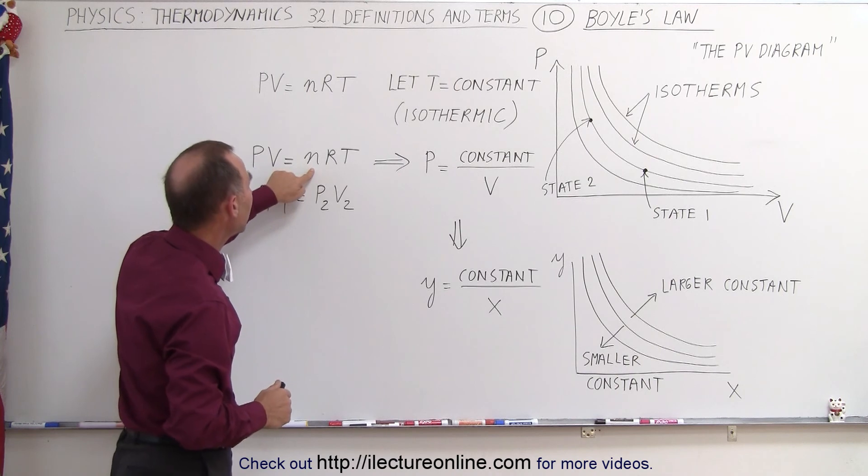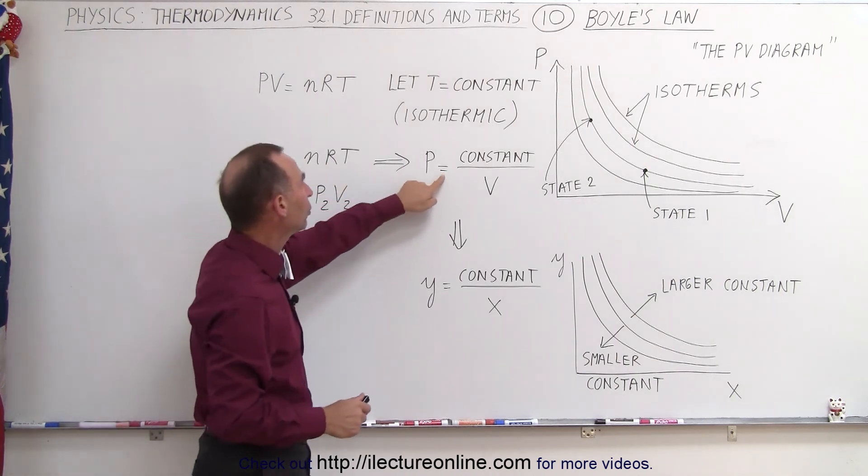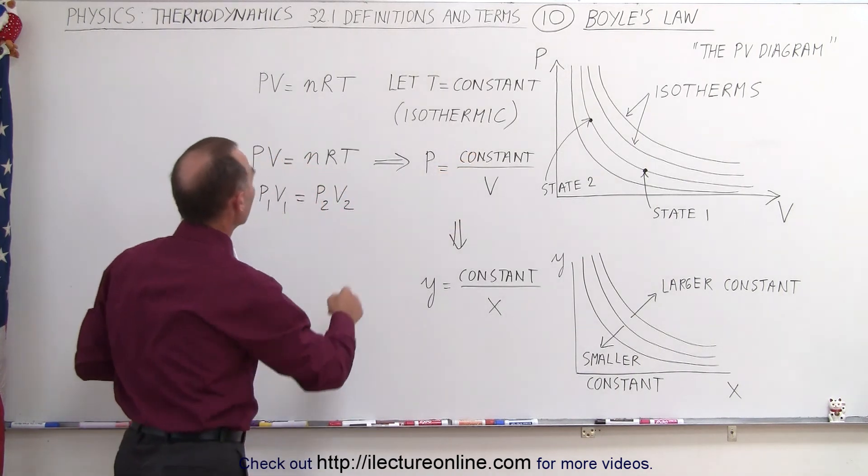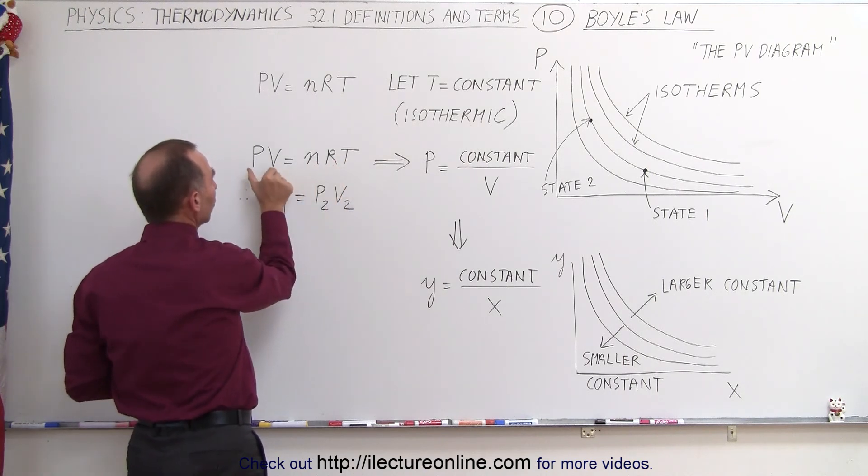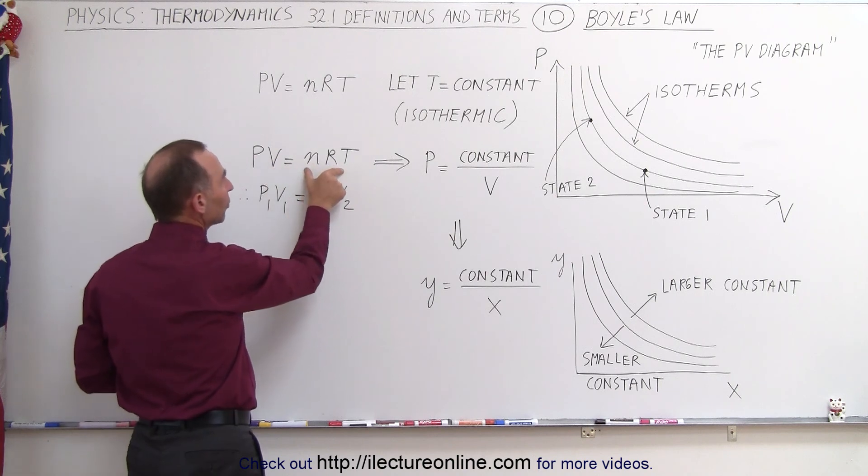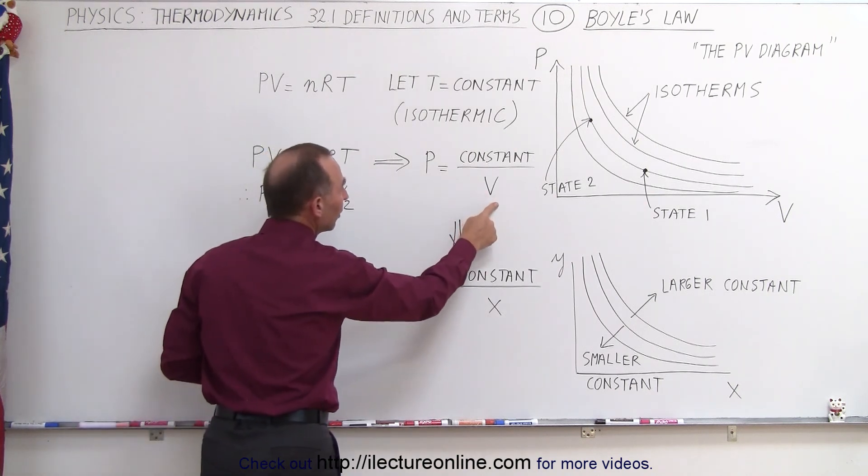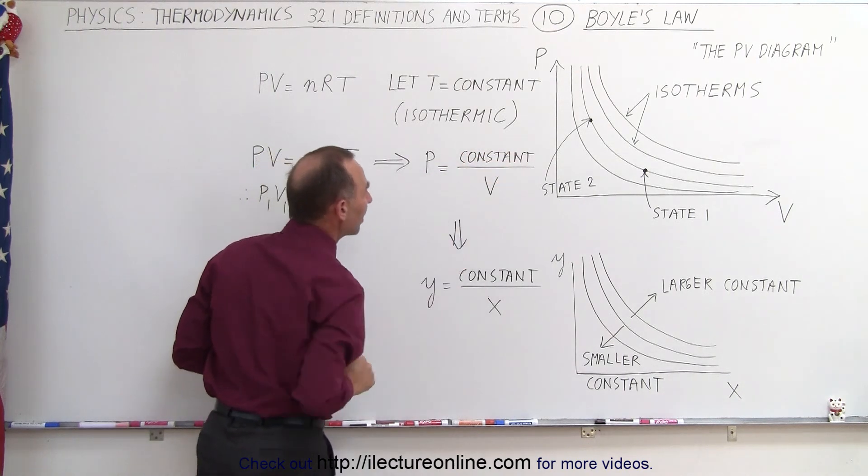Because if T is constant, we know R is constant, we keep the number of moles constant, so the product of P times V equals a constant. And then if we write V down in the denominator, we can write P equals a constant divided by V.